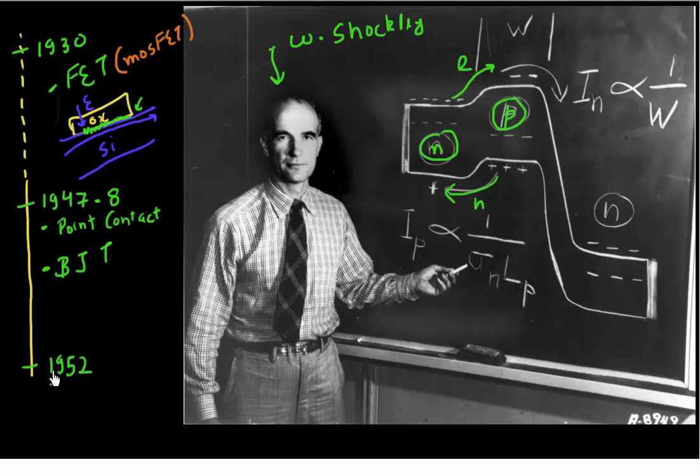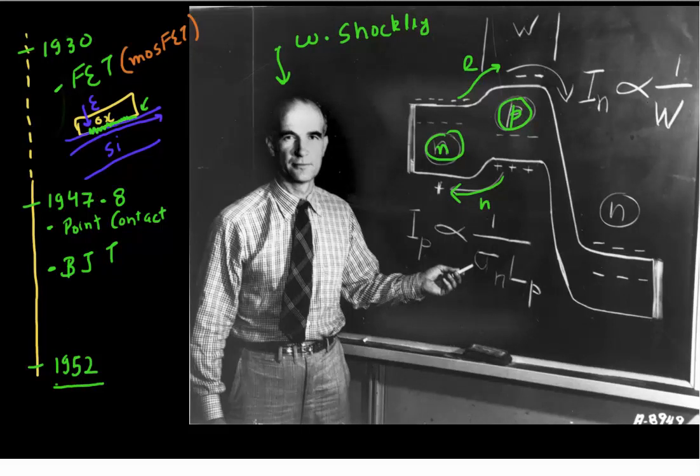So the year is 1952. Shockley has actually been pursuing this idea for quite a while and he's frustrated with not being able to demonstrate it. So in the year 1952, Shockley had a brain wave and he figured out a way where he could still make a field effect transistor.